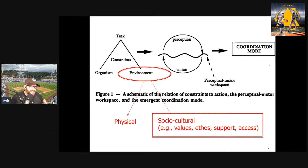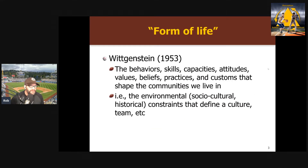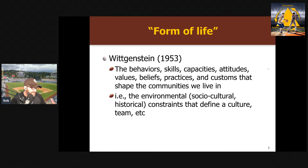Trying to understand how these shape skill is obviously really important but very challenging. One way we can think about and put it all together is using a phrase you'll hear a fair bit in the ecological approach: 'form of life,' from Wittgenstein in 1953. Basically, the form of life means the behaviors, capacities, attitudes, and all the things that shape the community we live in — the social, cultural, historical, and political constraints that define a culture, a team, a group, and so on.